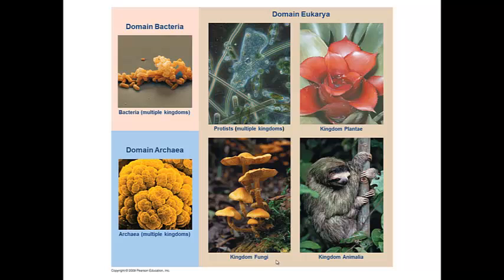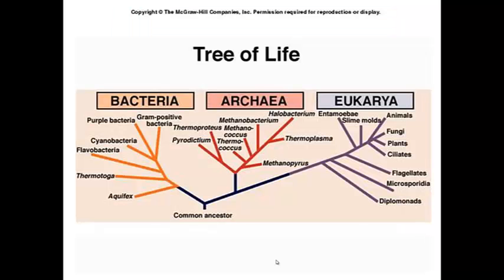In domain eukarya, they have subdivided into a second taxonomic category, which is the kingdom. So let's take a look at the characteristics of each of these three domains. Here we see them in terms of the tree of life. This identifies that all cells started from a common ancestor. And then over time, they evolved into the three domains. And those differences, we can identify as follows.